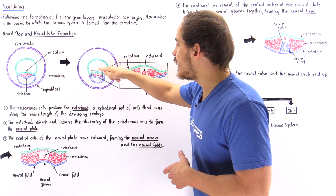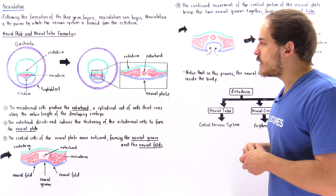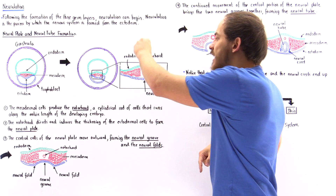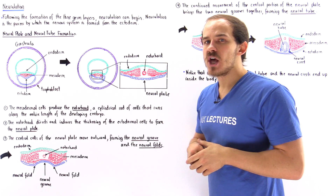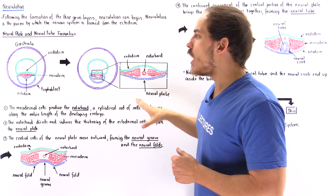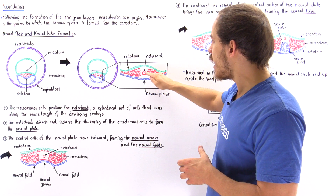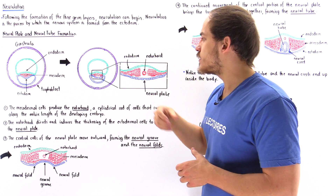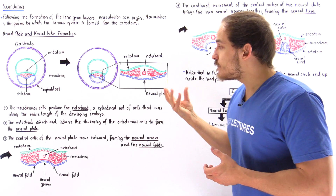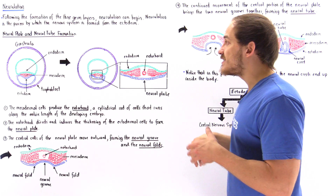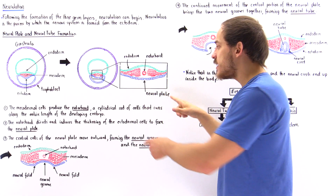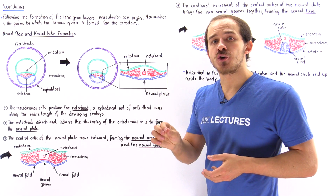Zooming in on the diagram, we get the following picture. This structure here is the notochord — it goes into the board and comes out of the board, running along the entire length of the developing organism. Since this is only a cross section, that is why the notochord looks like a circle. The cells found in the notochord are responsible for stimulating and inducing the thickening of the ectoderm region to produce a structure known as the neural plate.